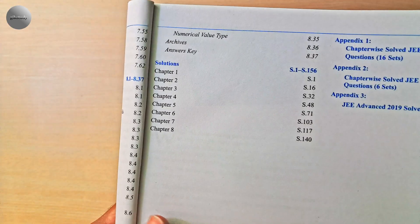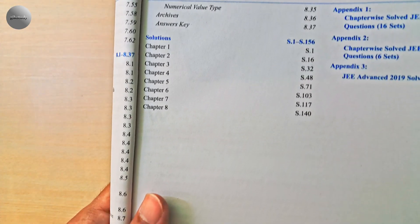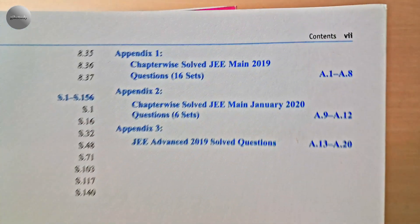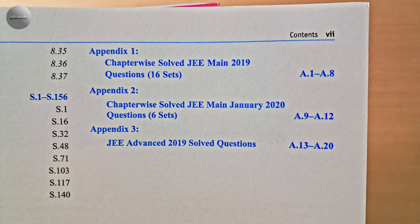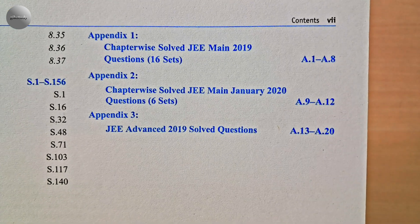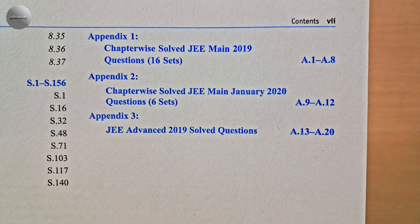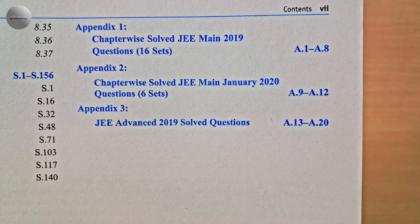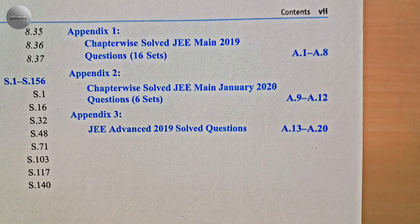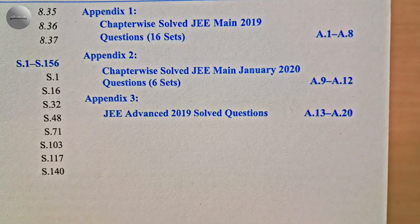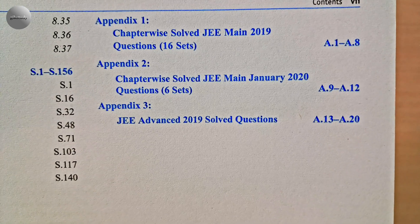The book also contains solutions for all chapters 1 through 8. Additionally, there are appendices: Appendix 1 covers Chapter 1 with Solved JEE Main 2019 questions in 16 sets; Appendix 2 covers Chapter 1 with Solved JEE Main January 2020 questions in 6 sets; and Appendix 3 covers JEE Advanced 2019 Solved Questions.